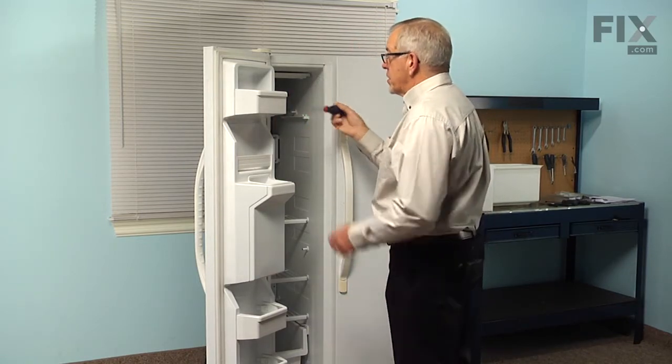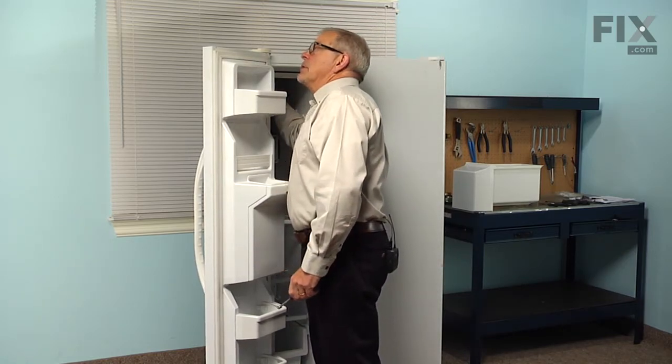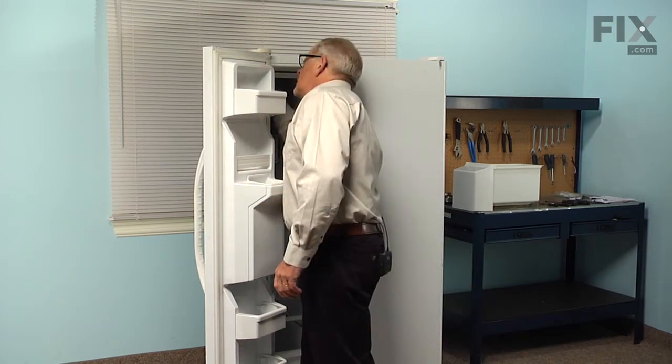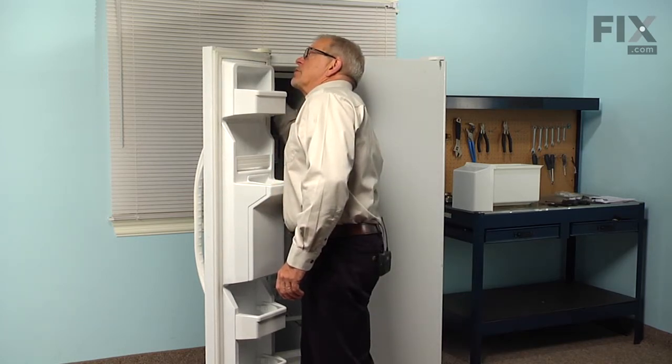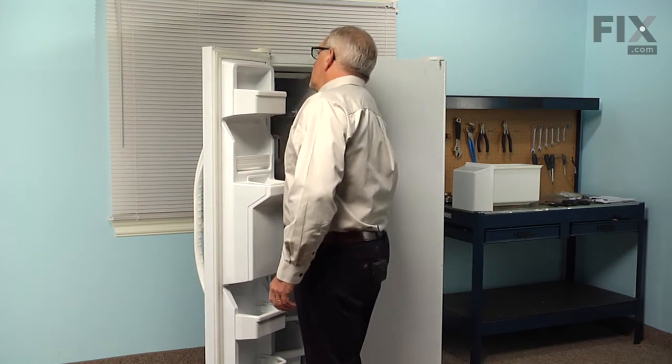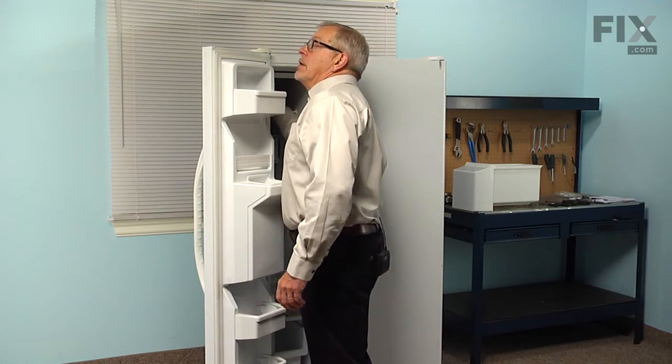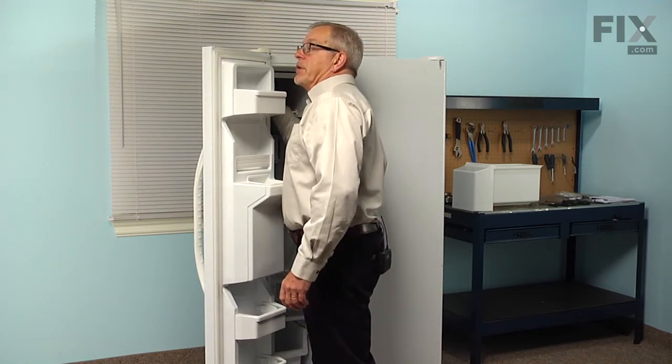Then using our quarter inch nut driver, we'll locate the two mounting screws that are located on the side wall. We don't need to remove these two screws, we just need to loosen them several turns because it is a keyhole type slot that is on the side of that ice maker, we just need to be able to lift it up off of those screws.